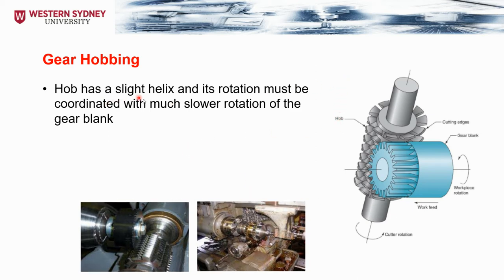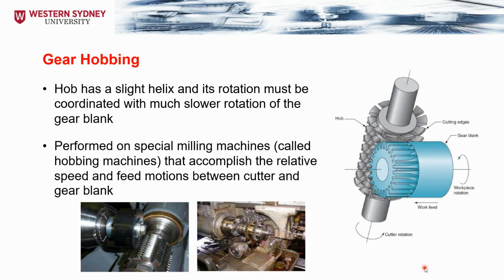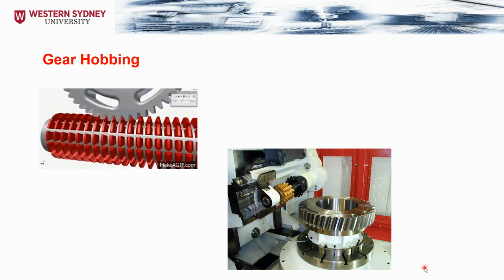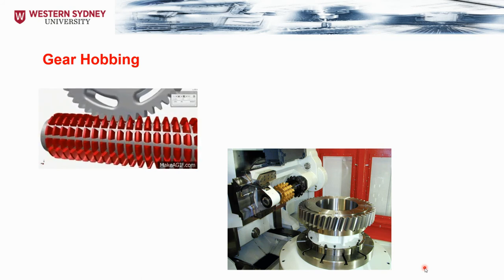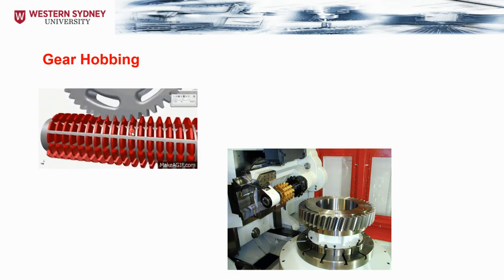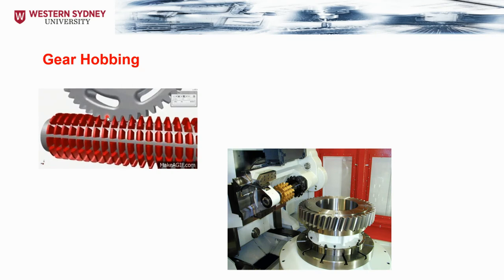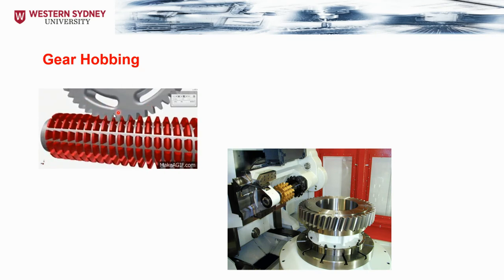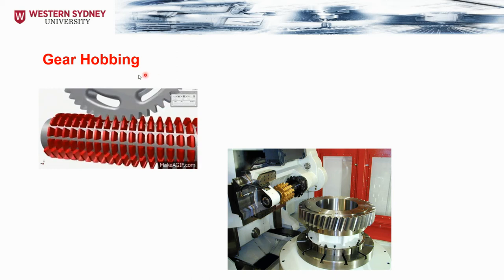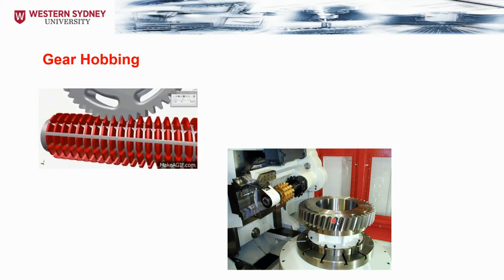In gear hobbing, the hob has a slight helix and its rotation is coordinated with the slower rotation of the gear blank on special hobbing machines. The cutting tool is fed in the axial direction while the workpart rotates, generating the final gear shape. In gear shaping, the cutting tool moves in a linear forward-and-backward motion with non-continuous cutting due to the tool leaving and re-entering the part, producing an impact motion.